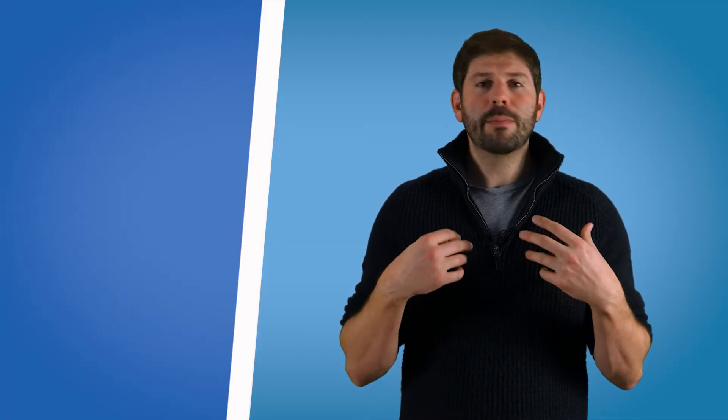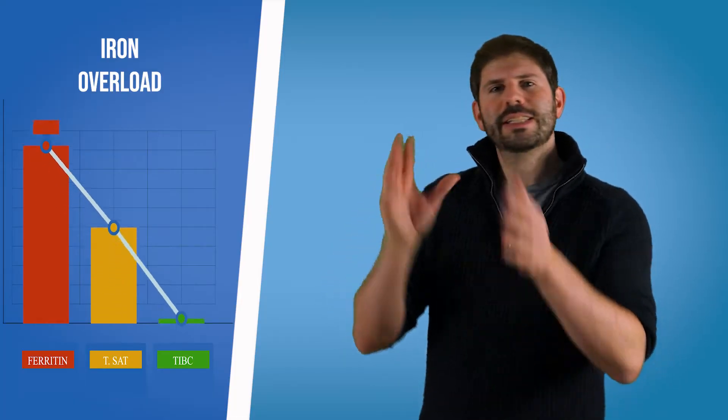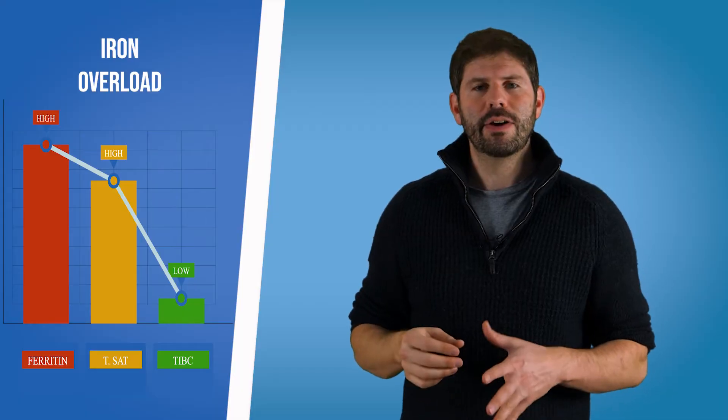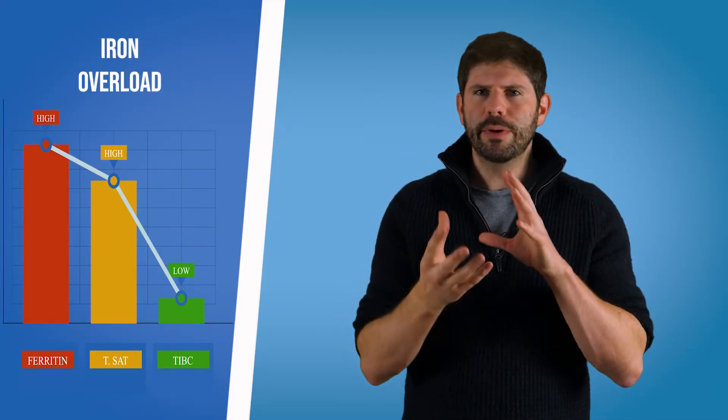Similarly, if you have something like iron overload where you have too much iron in your body, you just see the opposite picture where your ferritin and transferrin are very high and your TIBC is very low. So you can see how we can kind of put these together.